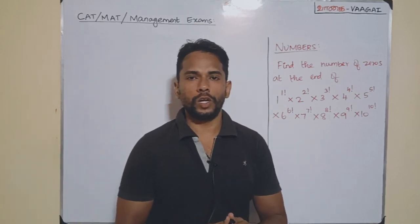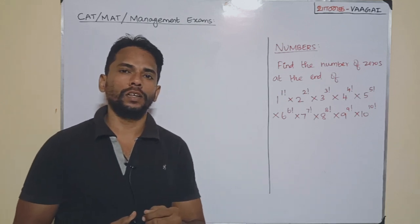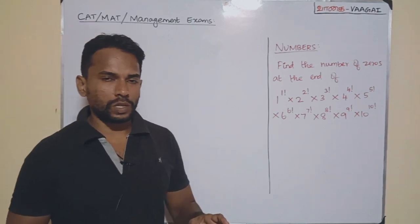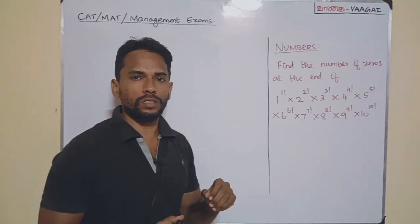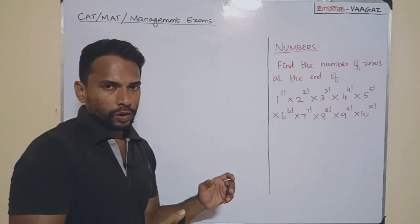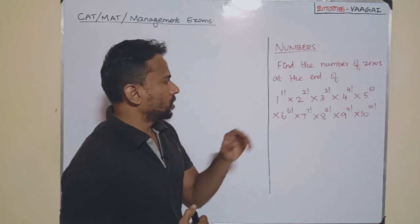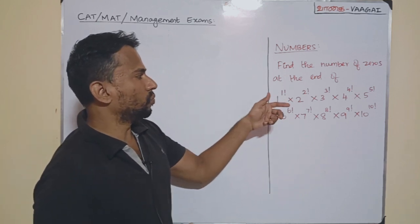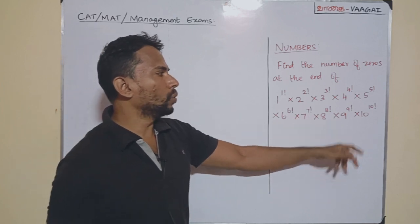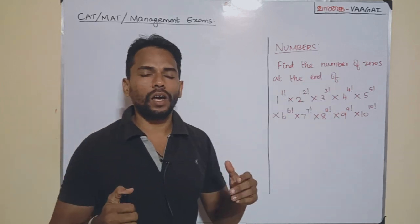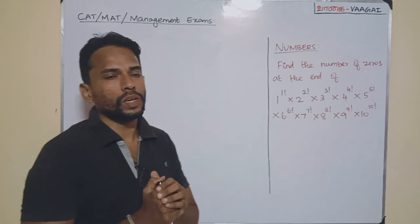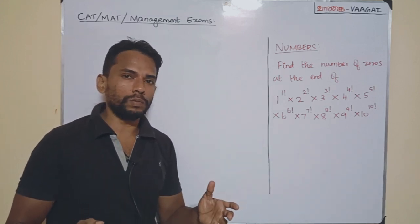Hi and hello friends, welcome back once again to our channel Vague Academy of Mathematics. In this session we have an interesting question from numbers — a very easy question. We have seen so many problems based upon the same concept. The question here: find the number of zeros at the end of the expression. We have a very big product given to us: 1 to the power 1 factorial, multiplied by 2 to the power 2 factorial, into 3 to the power 3 factorial, into 4 to the power 4 factorial, and all the way up to 10 to the power 10 factorial.